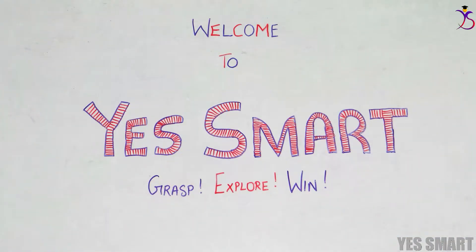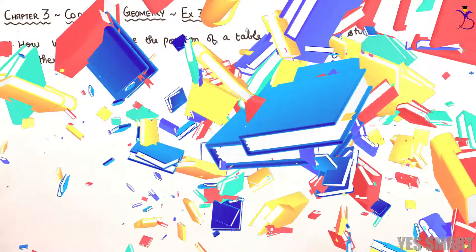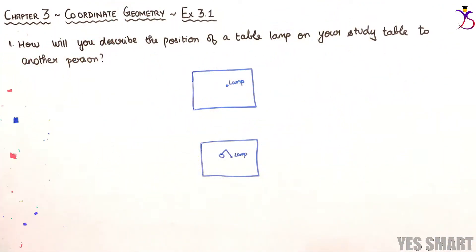Hello everybody, welcome to Smart Grasp — Explore and Win. Greetings for the day. Let's get started with today's topic: Chapter 3, Coordinate Geometry, Exercise 3.1. The first sum asks: how will you describe the position of a table lamp on your study table to another person?